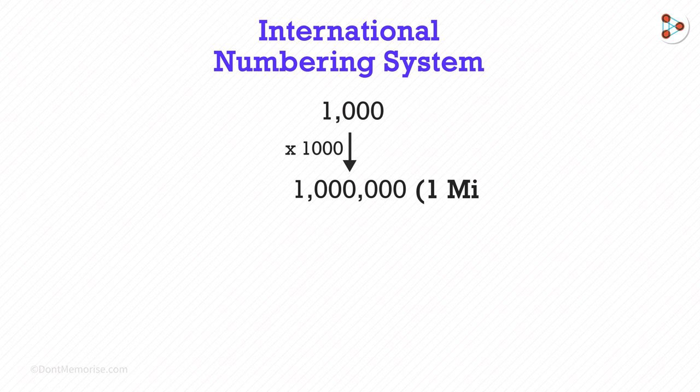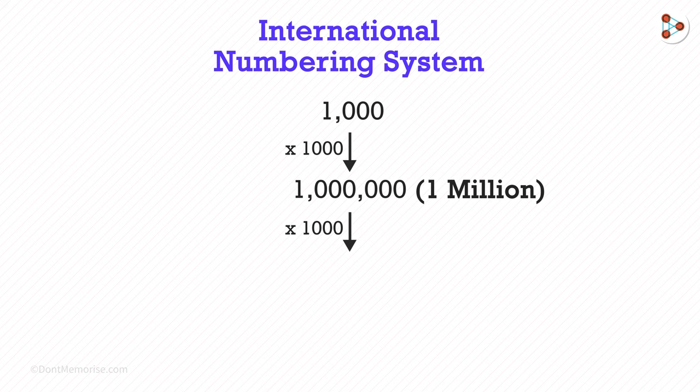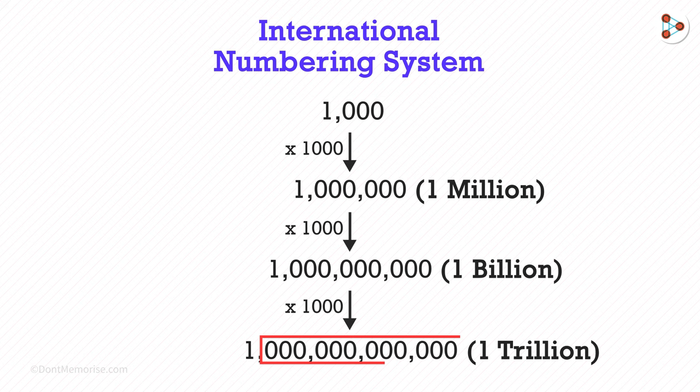Let us begin with 1,000. Now 1,000 times 1,000 gives us 1 million, which has 6 zeros. Now 1 million multiplied by 1,000 gives us 1 billion, which has 9 zeros. And 1 billion multiplied by 1,000 gives us 1 trillion, and this has 12 zeros.